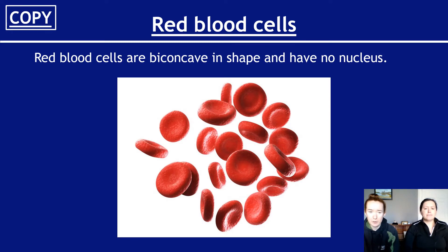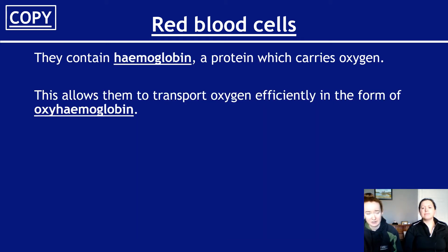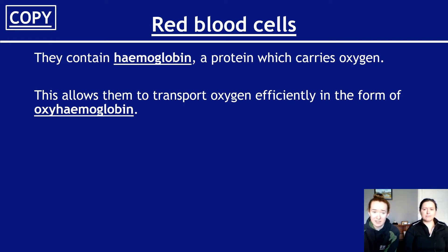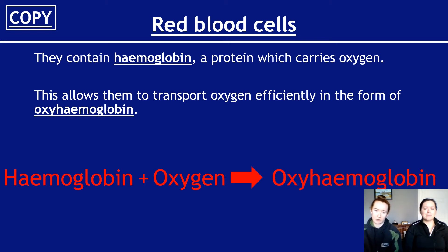In terms of red blood cells, here's a picture of them. You need to know that they are biconcave in shape - basically they have a little dip in the middle, almost like a doughnut if the hole just hadn't quite gone the whole way through. You also have to know that they have no nucleus, which makes them very special unlike all the other cells we've talked about so far. They also contain a molecule called haemoglobin, which is basically a protein responsible for carrying oxygen. The main role of red blood cells is to carry oxygen around your body so your muscles and various things can get oxygen when they need it. The haemoglobin carries the oxygen, and when they combine it becomes a molecule called oxyhaemoglobin.